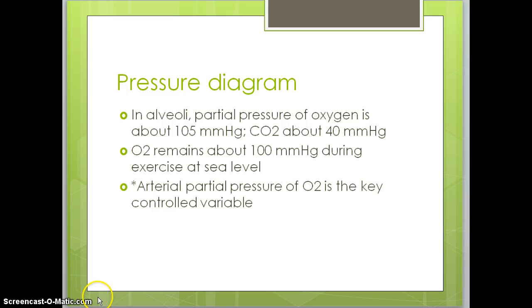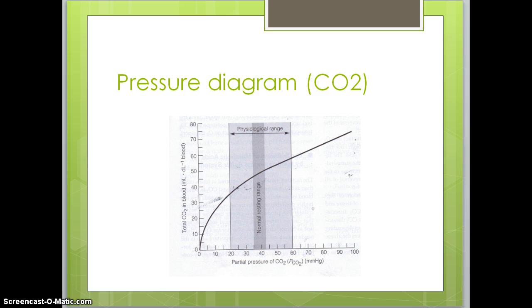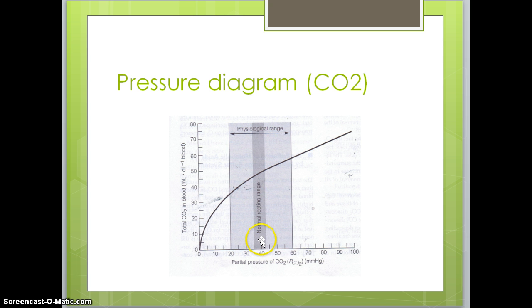In the alveoli, the partial pressure of oxygen is about 105 millimeters of mercury, and carbon dioxide is about 40 millimeters of mercury. Oxygen remains at about 100 millimeters of mercury during exercise at sea level, so it's relatively constant. The arterial partial pressure of oxygen is the key controlled variable — it's more tightly controlled than carbon dioxide and pH, although those other two are still very important. The diagram shows the pressure of carbon dioxide compared to the total amount of carbon dioxide in the blood. The relationship is relatively linear, with the normal range being about 35 to 43 millimeters of mercury.